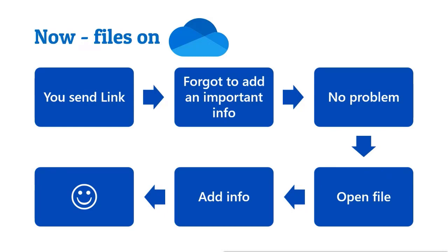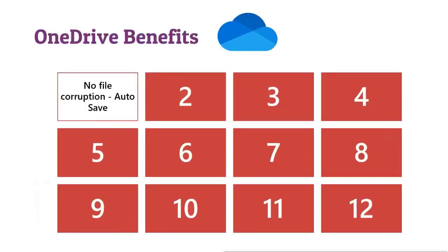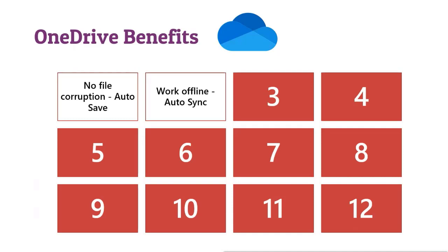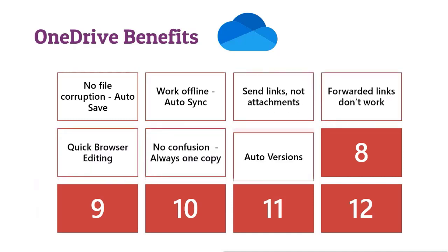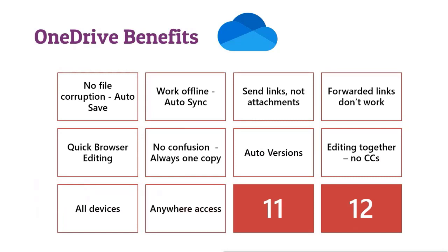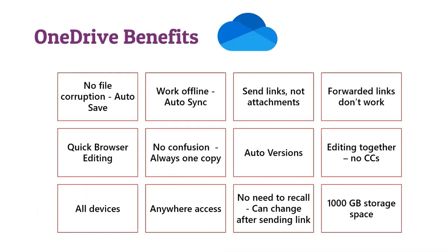So, by using OneDrive, what is the extra effort? When you go to File > Save As, instead of clicking on PC, you click on OneDrive — not even a single extra click. But by virtue of putting it on OneDrive, you get 12 benefits. I'm not going to read out all of them — just read them. If any of you have questions, let me take a pause now.